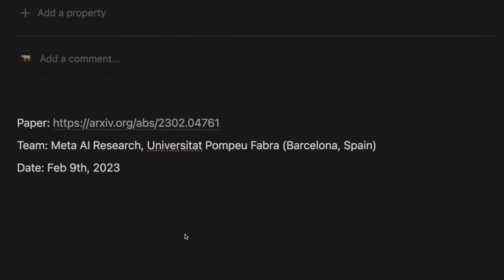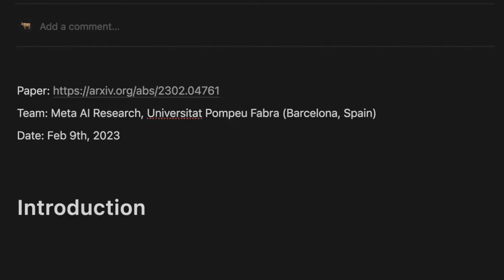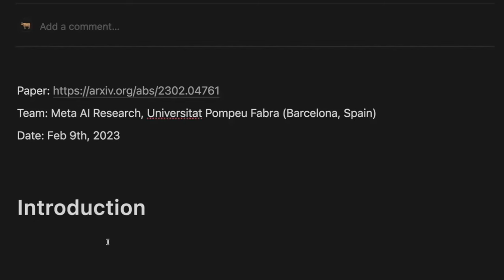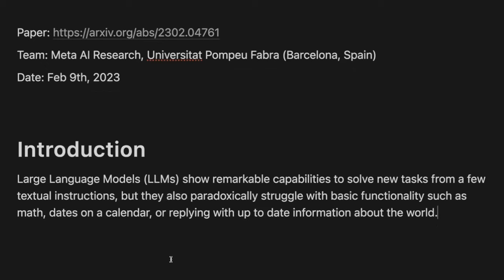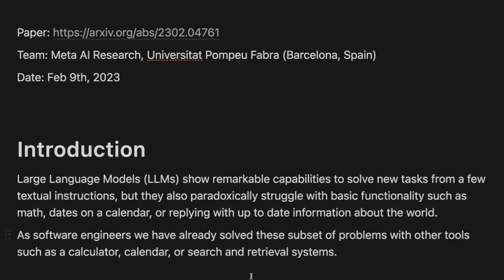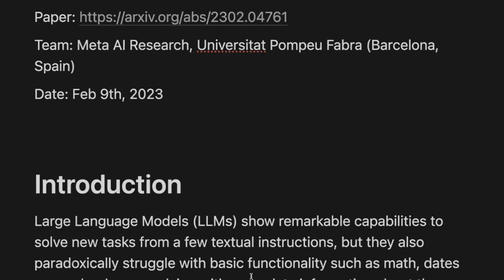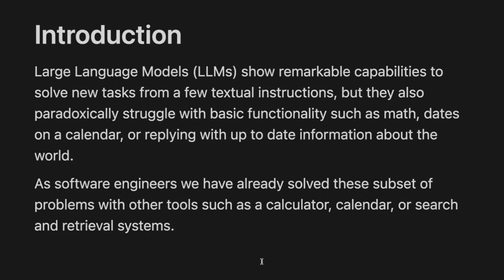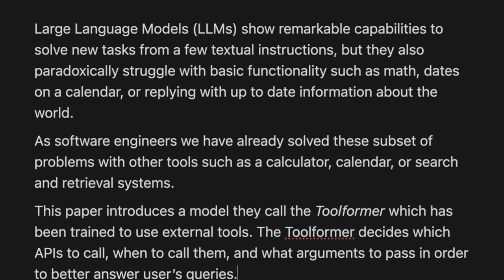Diving into the paper itself, they start by talking about how large language models have shown remarkable capabilities to solve new tasks from just a few examples. But paradoxically, they struggle with a lot of basic functionality such as math, dates on a calendar, or staying up to date with information happening in the world, like current events. Luckily, as software engineers, we've already solved a lot of these problems with tools we've built, such as a calculator, calendar, or a search and retrieval system.